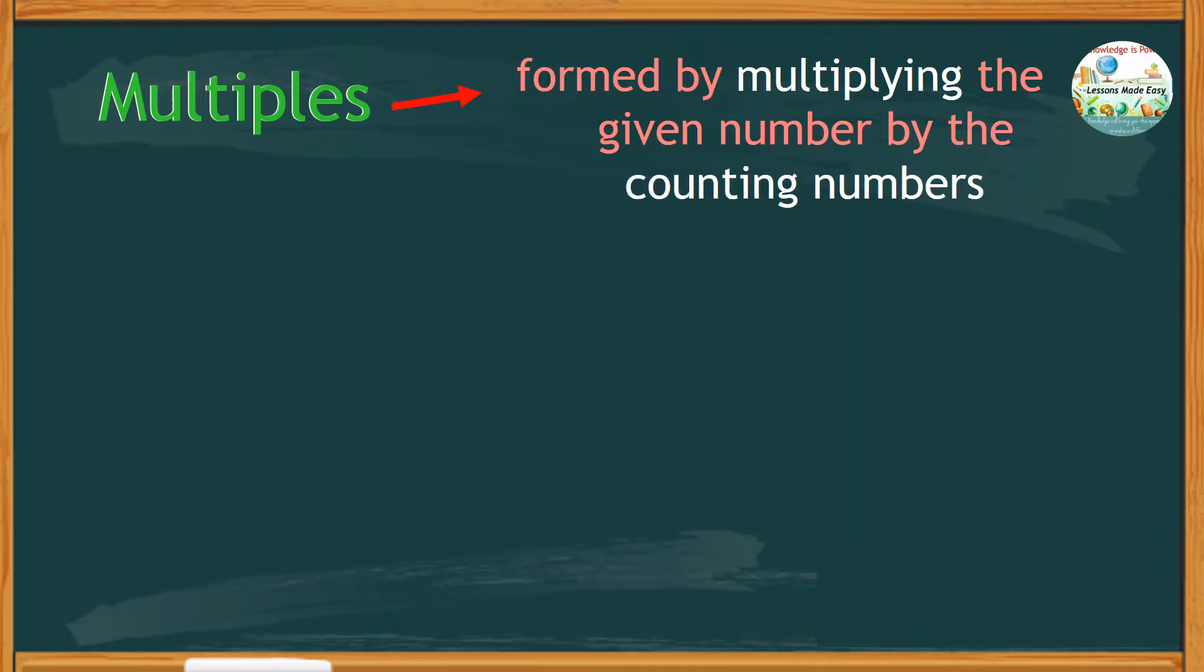Counting numbers are the usual numbers we use when we count like 1, 2, 3, 4, 5, 6, 7, 8, 9, 10, and so on.